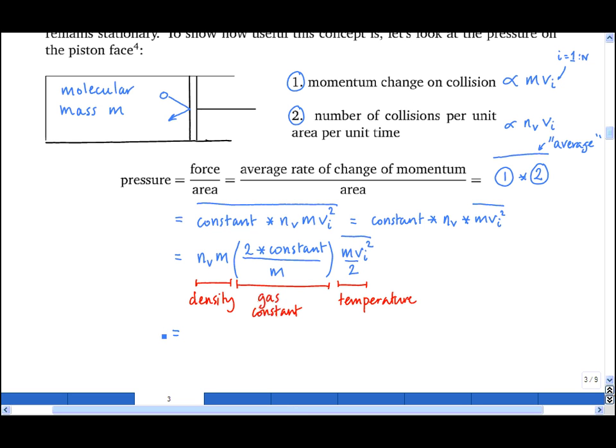So we put this all together into a form that we're much more familiar with. P, the pressure, is equal to the density, times R, the gas constant, times T, the temperature, which is the ideal gas equation of state.